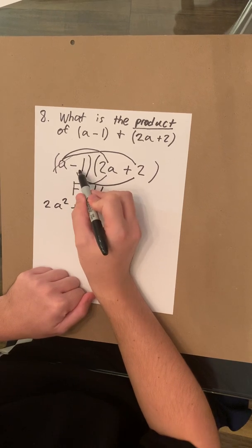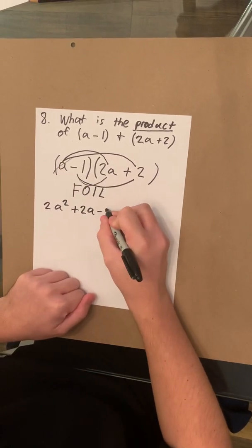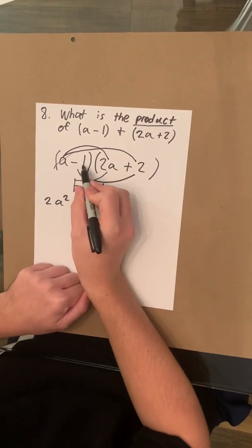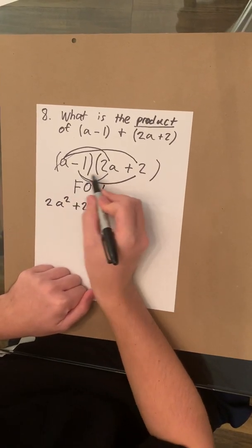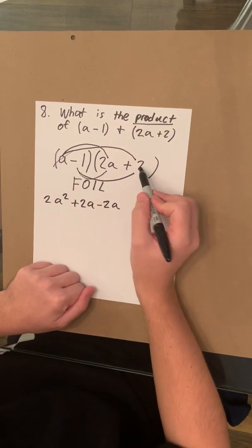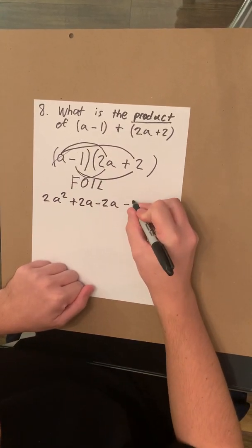Next, we have negative 1 times 2a. So that's negative 2a. Because remember that negative is a part of this number. It will come with it every time you multiply it. Second, we have negative 1 times 2, which is negative 2.